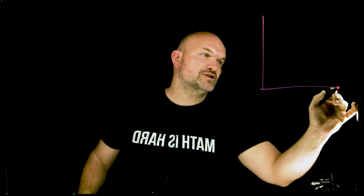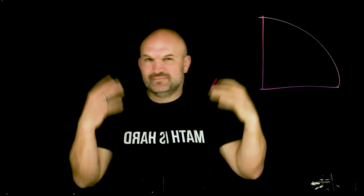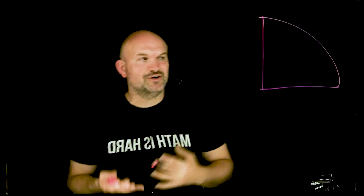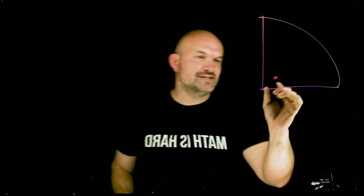To evaluate trigonometric functions using the unit circle, there are two main things I want you to know. The first is going to be the first quadrant — not just the quadrant itself, but the points and the angles that are aligned to it.